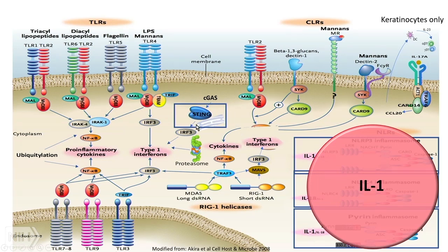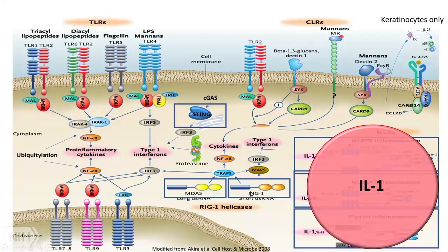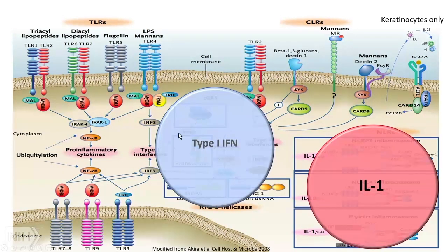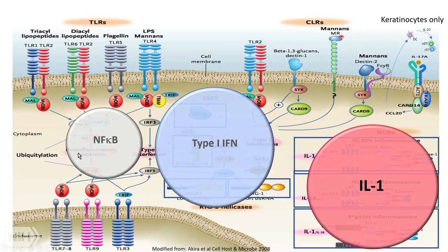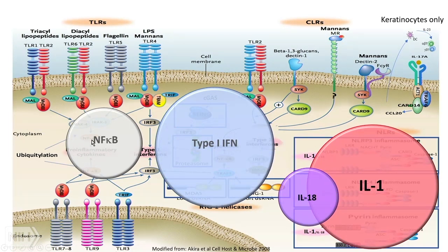Mutations in intracellular sensors of nucleic acids also cause auto-inflammatory disease, such as gain-of-function mutations in STING causing SAVI. There are variants associated with Aicardi-Goutières syndrome and dysfunction in the proteasome system — they all cause type I interferonopathies. There are also NF-kB-mediated diseases and IL-18-mediated diseases, which also have the component of IL-1. Scott talked this morning about IL-18-mediated diseases, and I won't talk about the NF-kB.